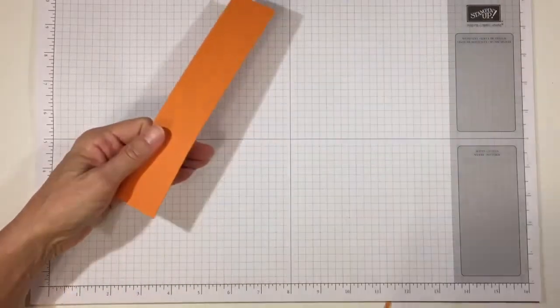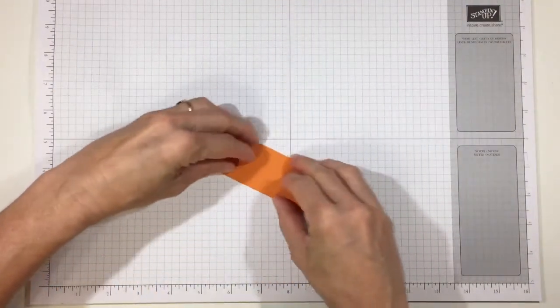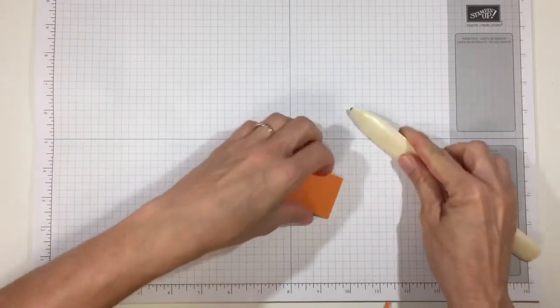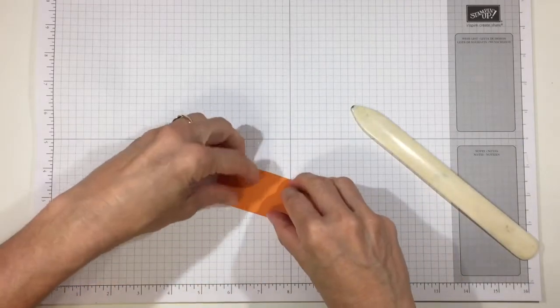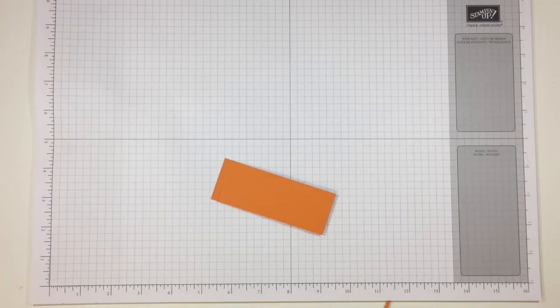Go ahead and fold and burnish the score lines, making sure that you line up the sides so he's straight. And let's bring in the envelope punch board.